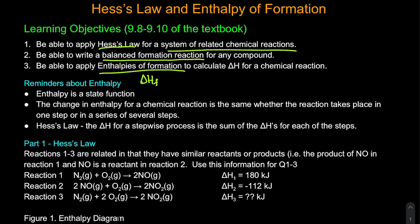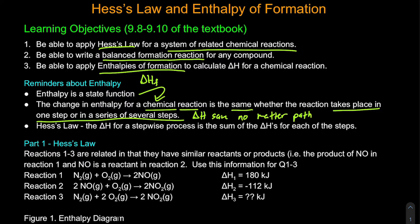Enthalpy is a state function, and that's important because the change of enthalpy for any chemical reaction is the same no matter what step, process, or path the reaction undergoes. The delta H is the same no matter the path. Because of that, we can use Hess's law: the enthalpy change for a stepwise process is the sum of all the enthalpy changes for each of the steps.